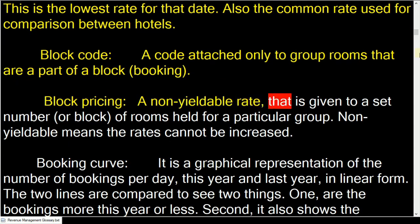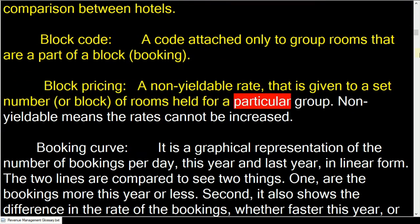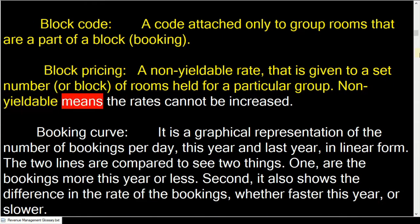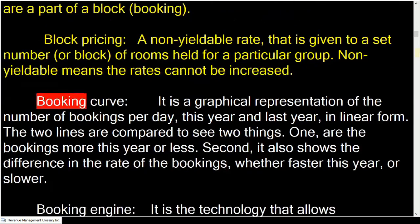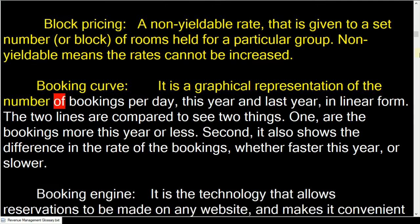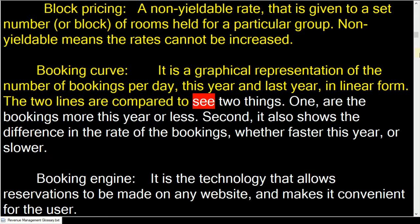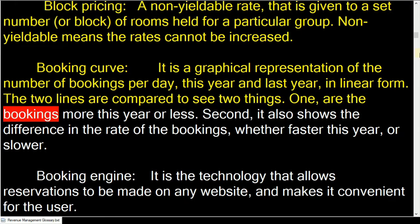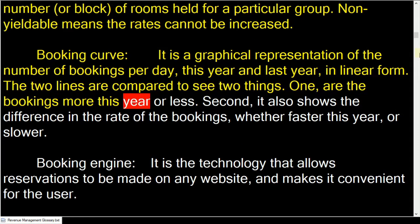Block code is a code attached only to group rooms that are part of a block. Block pricing is a non-yieldable rate given to a set number of rooms held for a particular group — non-yieldable means the rates cannot be increased. Booking curve is a graphical representation of the number of bookings per day, comparing this year and last year in linear form.